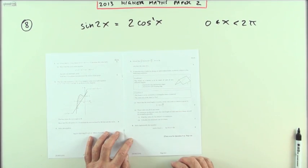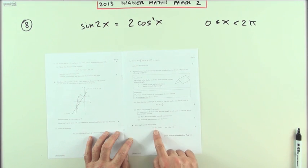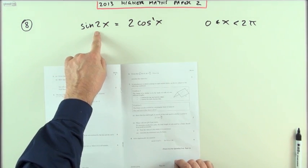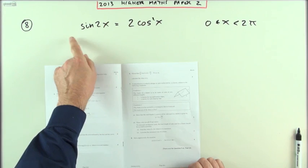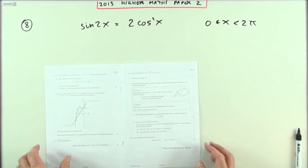Number 8 from the 2013 Higher Maths paper 2, a double angle equation. Now it's just sin 2x, there's only one form of that. At first glance it might seem that this is going to be an easy one, but it's still 6 marks.